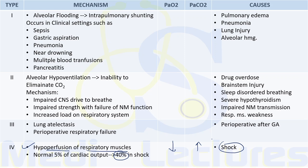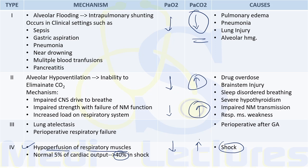In summary: PaCO2 is decreased only in Type 1 and increased in all other three types. PaO2 is decreased in all four types of respiratory failure. I hope you liked this short lecture on respiratory failure — kindly subscribe to the channel and share this video.